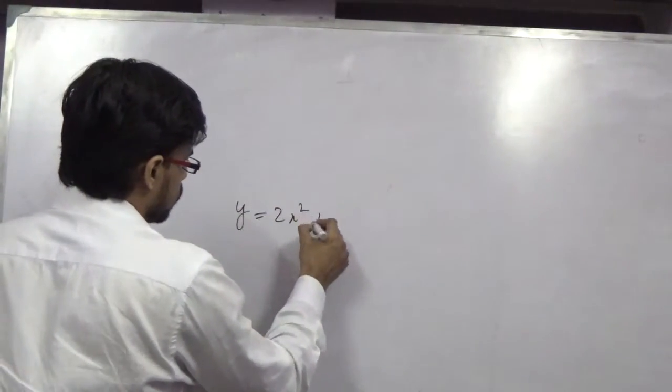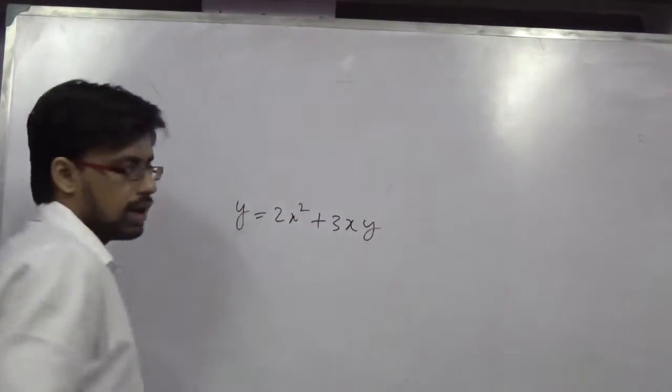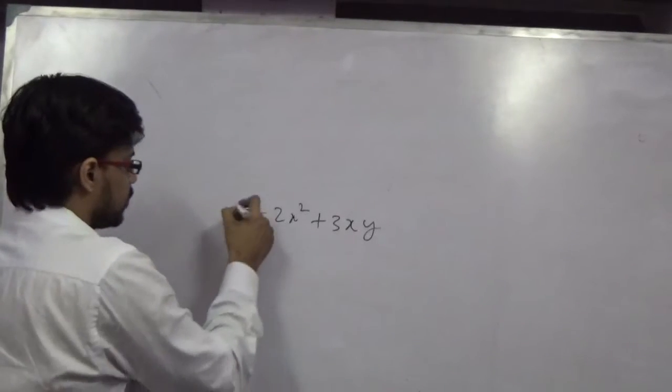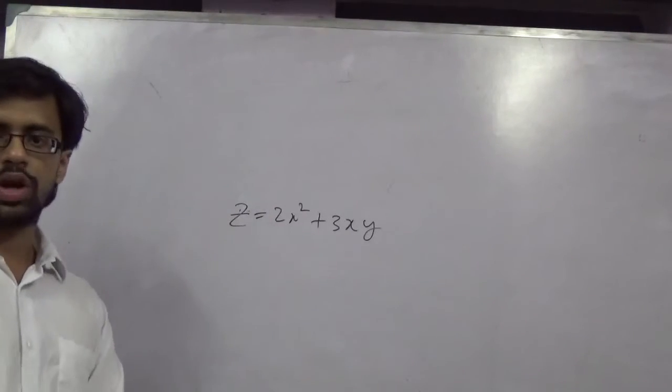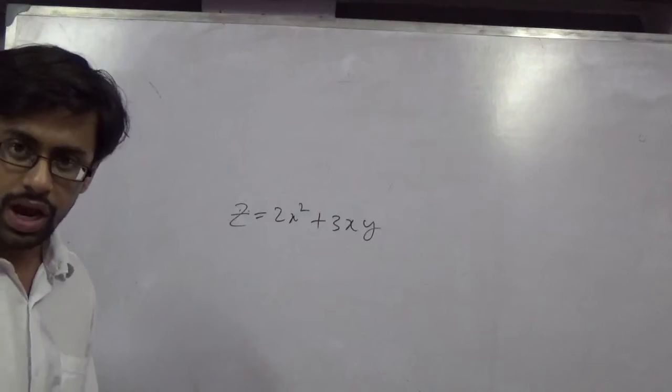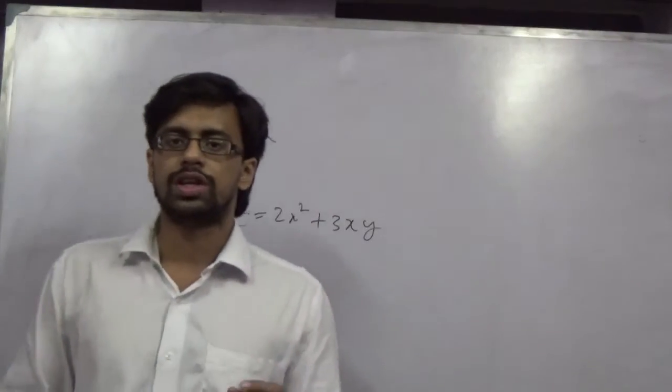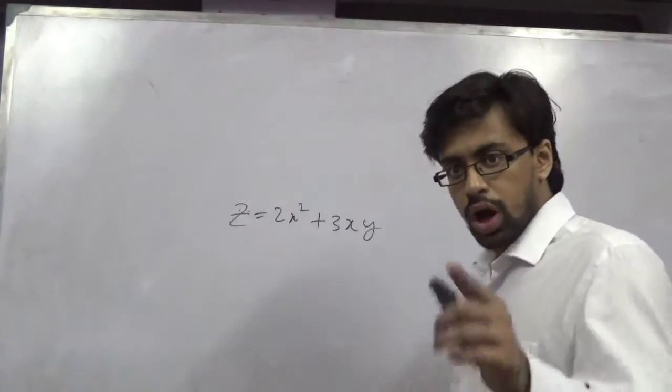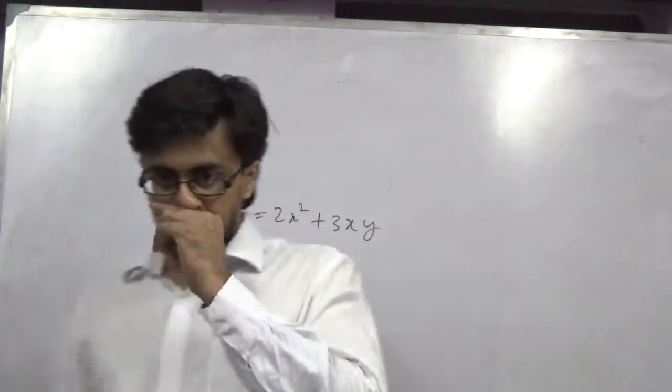For z equal to 2x squared plus 3xy, is it homogeneous? For example, z equal to 2x squared plus 3xy. Is it homogeneous? And if it is homogeneous then find its degree as well. So how you are going to find it? Very simple process.